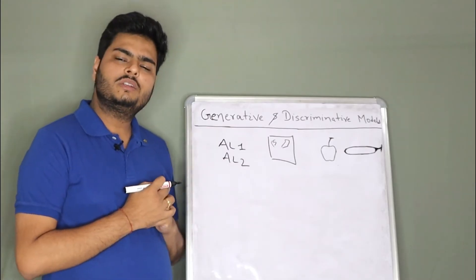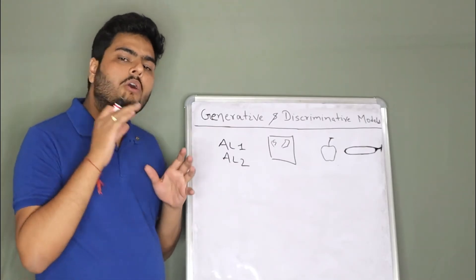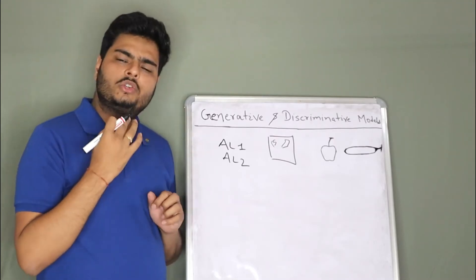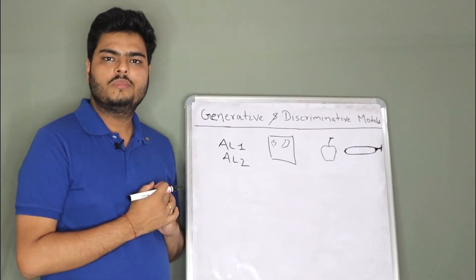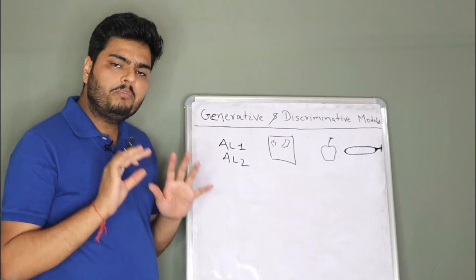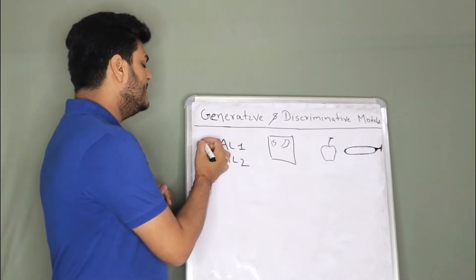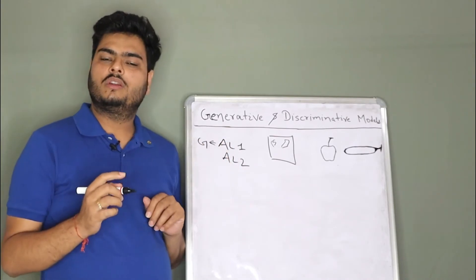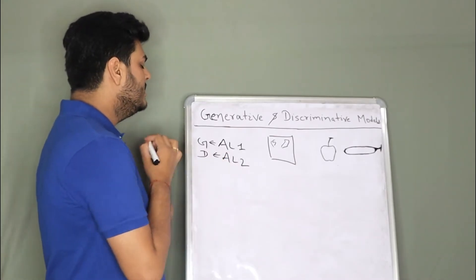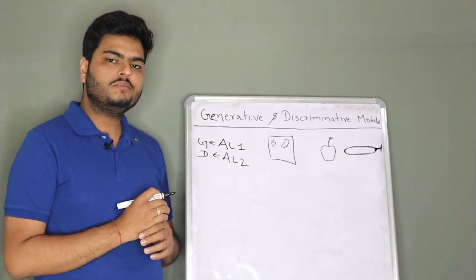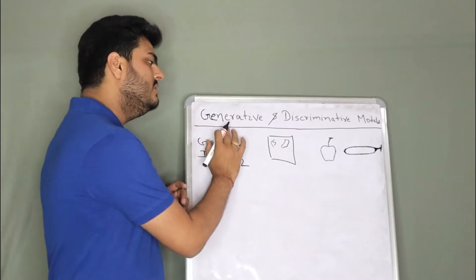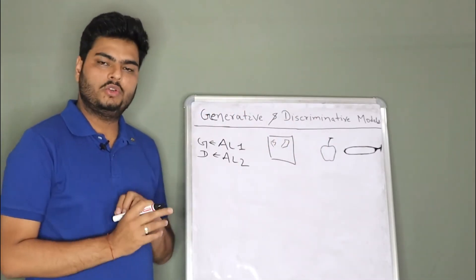But this guy did not take this approach. What this guy did is, he just compared the features of apple and banana in his mind. And he tells me, whatever you are showing me is an apple. So these two guys took two different approaches. The approach which this guy took is known as generative classification.